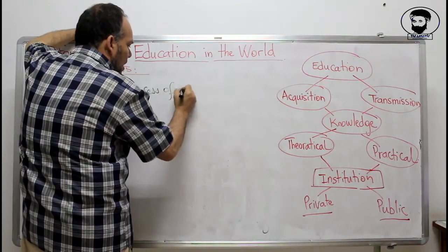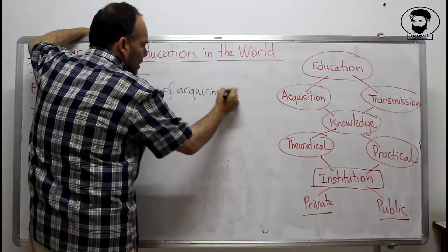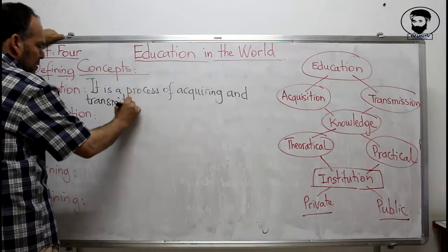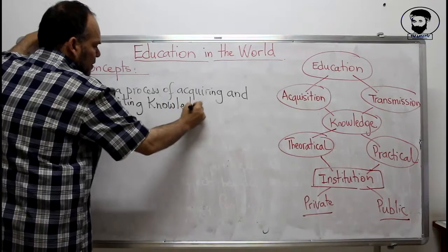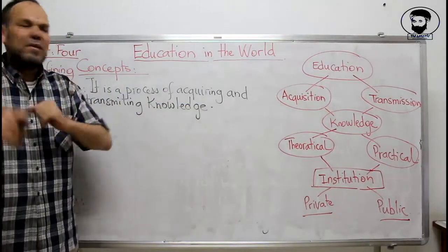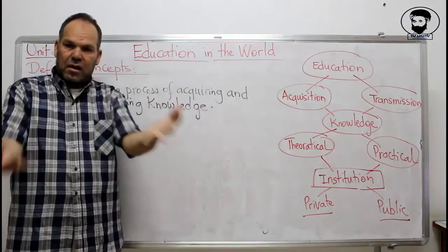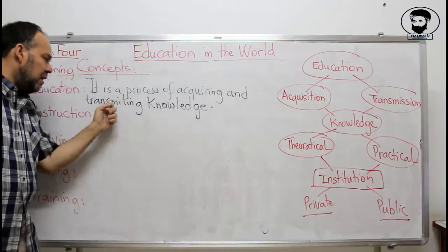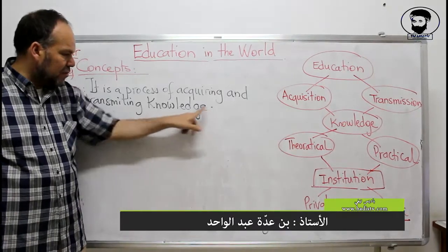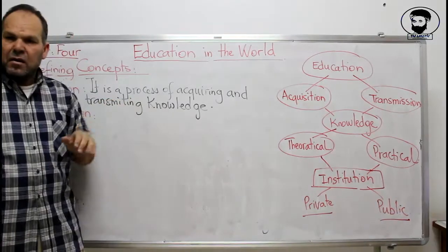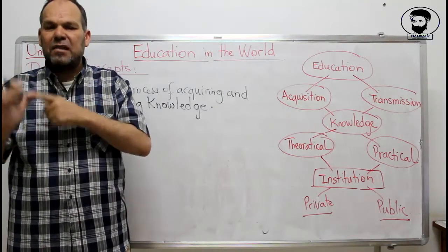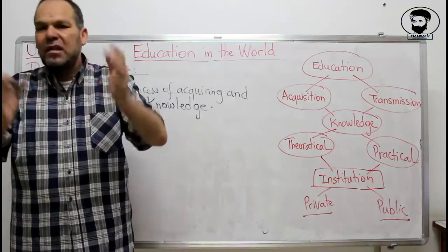It is a process of acquisition and transmitting knowledge. Simply, education is a long, step-by-step process in which you are acquiring and transmitting knowledge. Knowledge comes from the verb 'to know,' the noun is 'knowledge,' and the adjective is 'knowledgeable.' This knowledge includes Arabic, English, Spanish, mathematics, physics, biology, history, philosophy — all this is part of the knowledge.